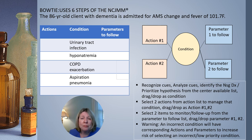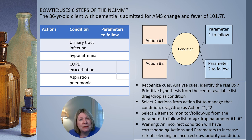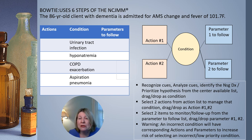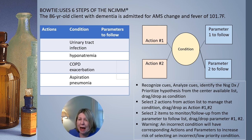Let's go to the right panel of this test screen. You see the bowtie itself — the condition is in the center, and that's what you do first. Corresponding to the condition you select from the left panel, you'll take two actions and follow two parameters. You need to recognize cues, analyze them, identify your prioritized hypothesis, and drag and drop that condition into the center of the bowtie. Then absolutely stick with the condition you selected, ensuring your actions and monitors match.